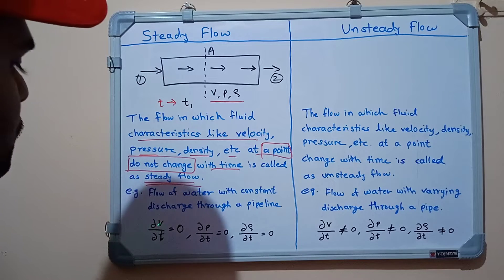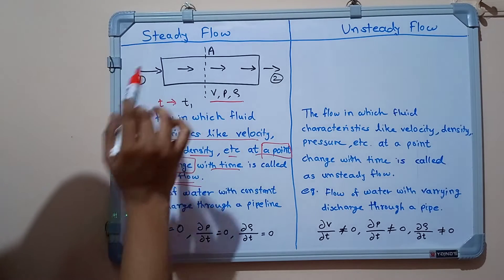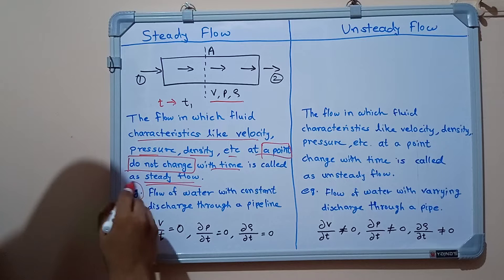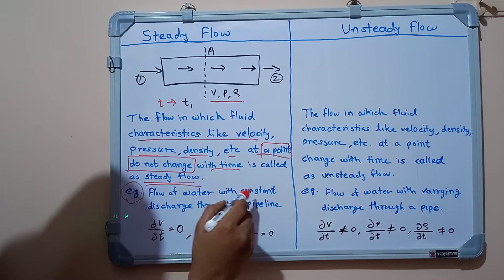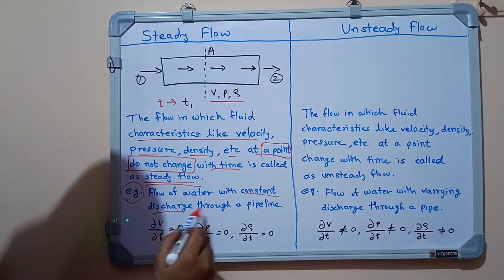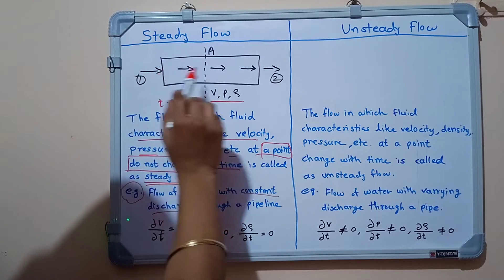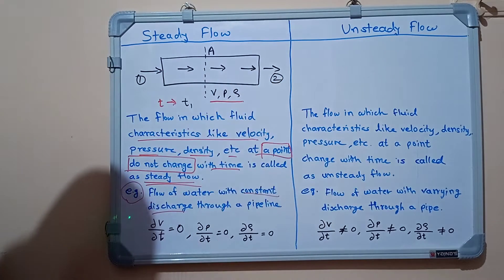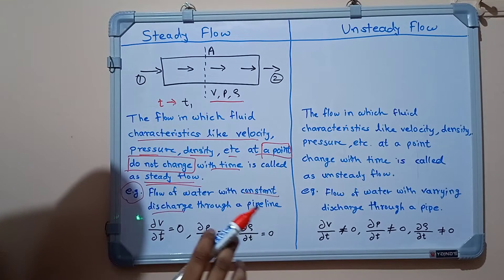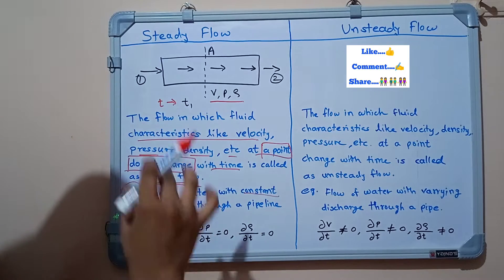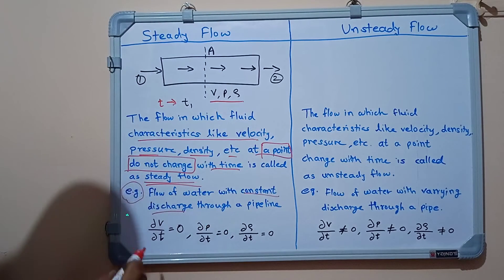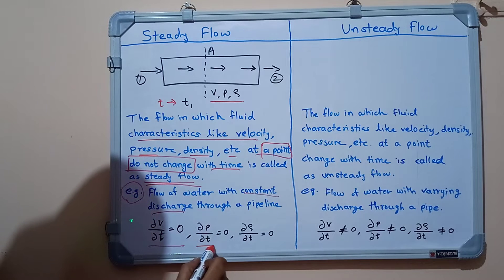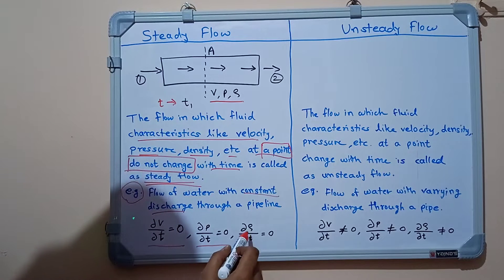An example of steady flow is the flow of water with constant discharge through a pipeline — we have taken constant discharge in this pipe. The equations for steady flow are: ∂V/∂t = 0, ∂P/∂t = 0, and ∂ρ/∂t = 0, meaning change in velocity, pressure, and density with respect to time are all equal to zero.